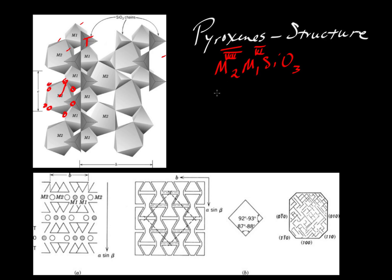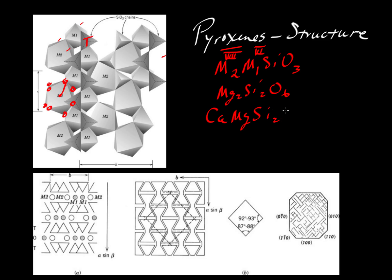How does this work with the more familiar formulas? You might know pyroxenes as being something like Mg2SiO6, or instead of magnesium you might have iron — so that would be enstatite the way I've written it here — or we might have diopside, CaMgSiO6 like this.